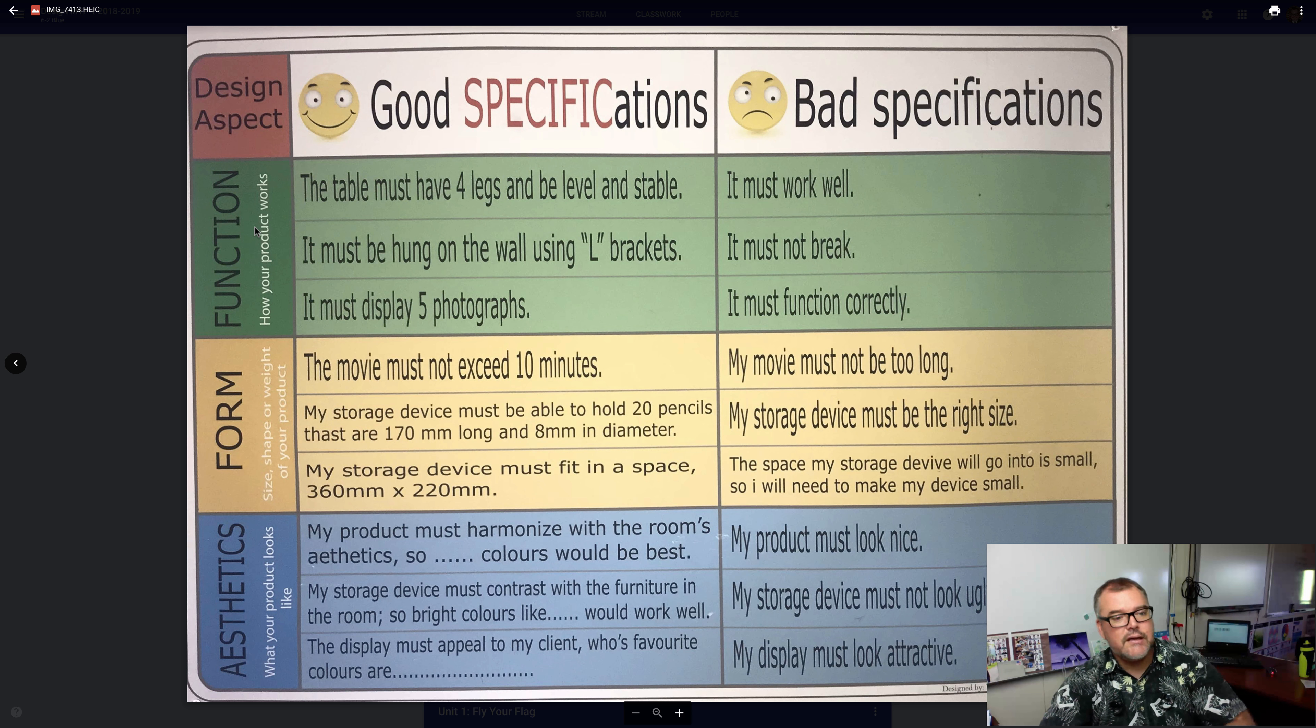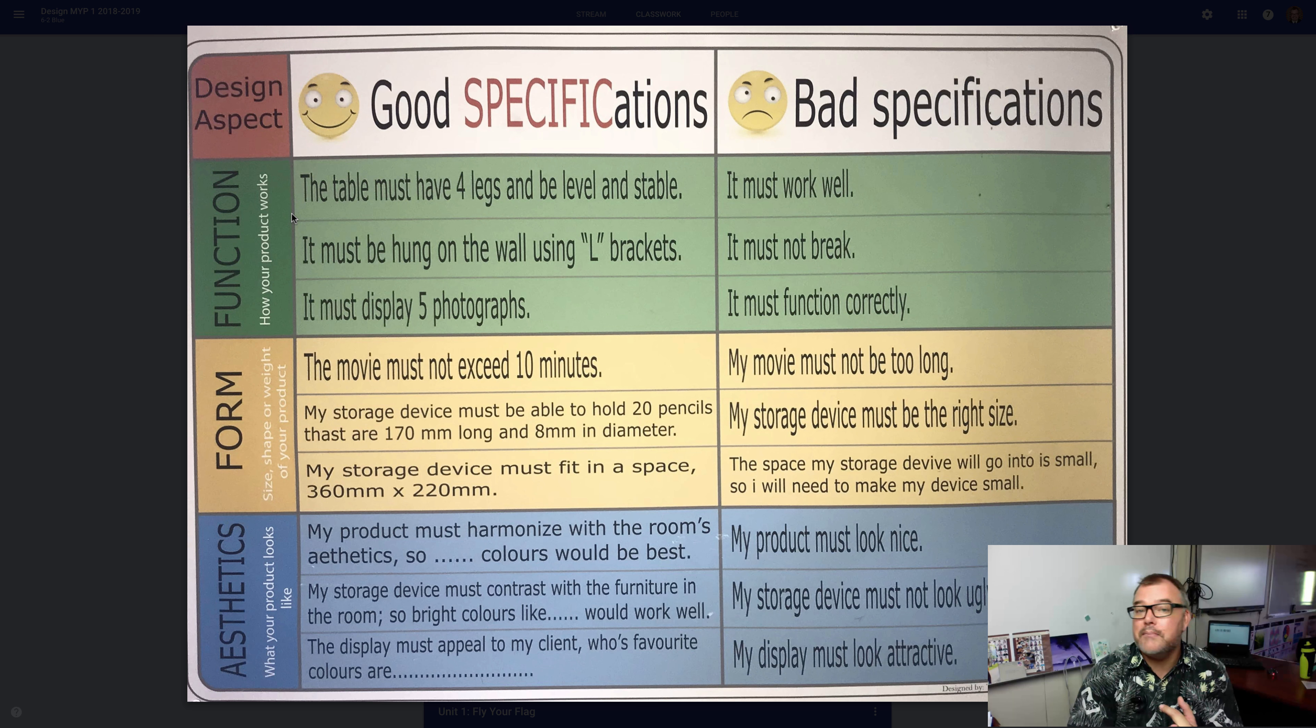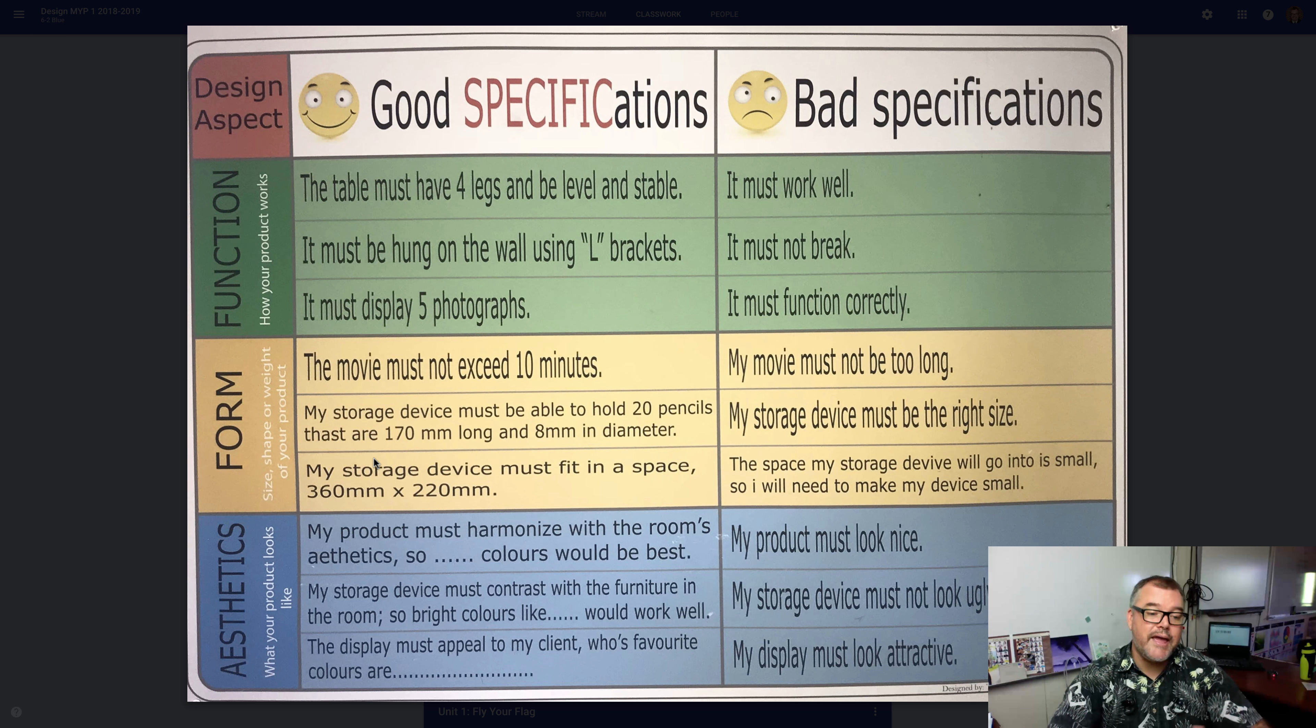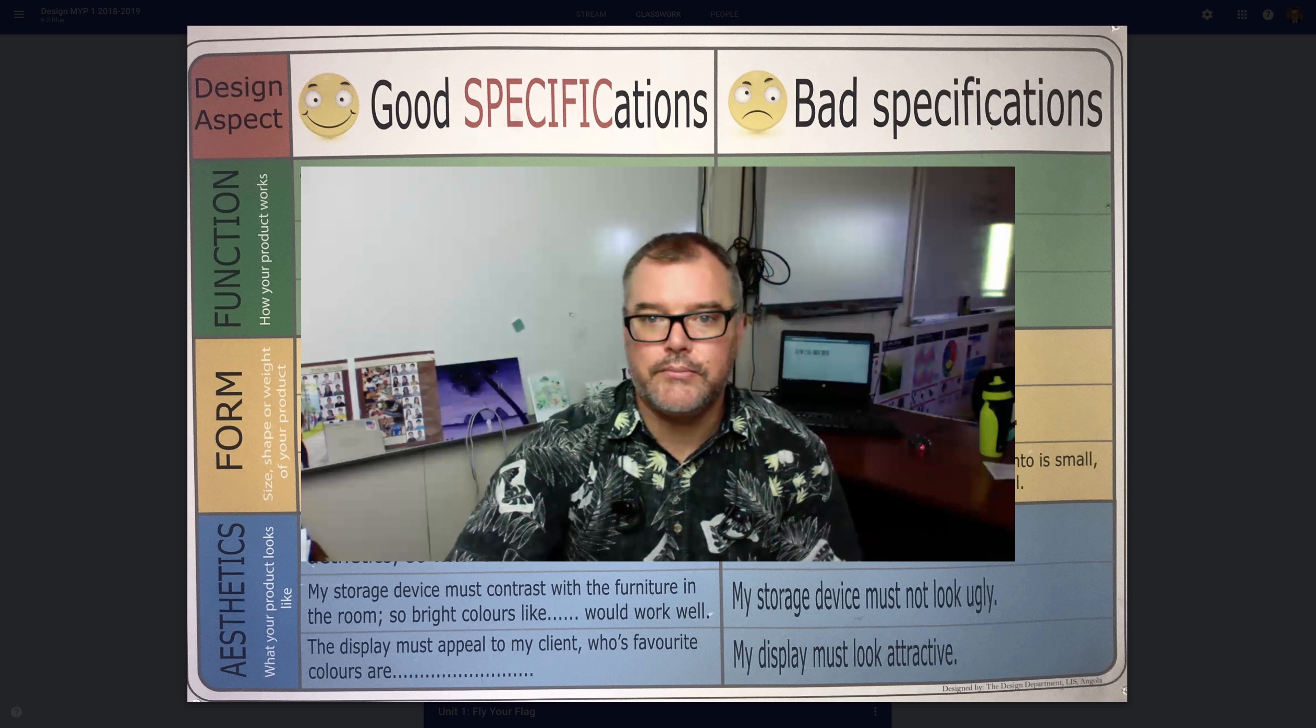There are a couple of different specifications in here that are great examples for tangible products. For example, this one on functions, how your product works, what must it do. Maybe we can talk about what it must carry, how far it must go, what it must be made out of, what it can't be made out of. Or the form, this is the size, the shape, the weight. I love this one, my storage device must, well, should your rover have a storage device? How big should that storage device be? Maybe you want to talk about the size of the ratio between your wheel and axle. And of course, aesthetics. We recognize that sometimes people want to make their rovers look a certain way, convey a certain message or make a specification related to that.